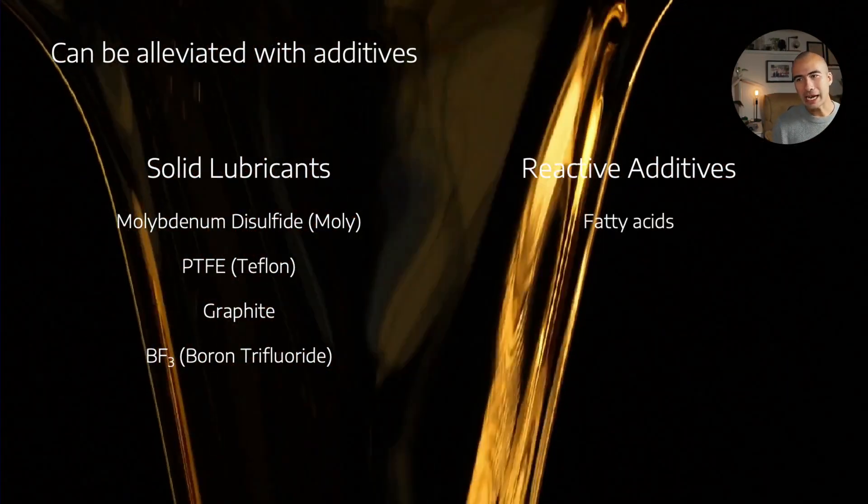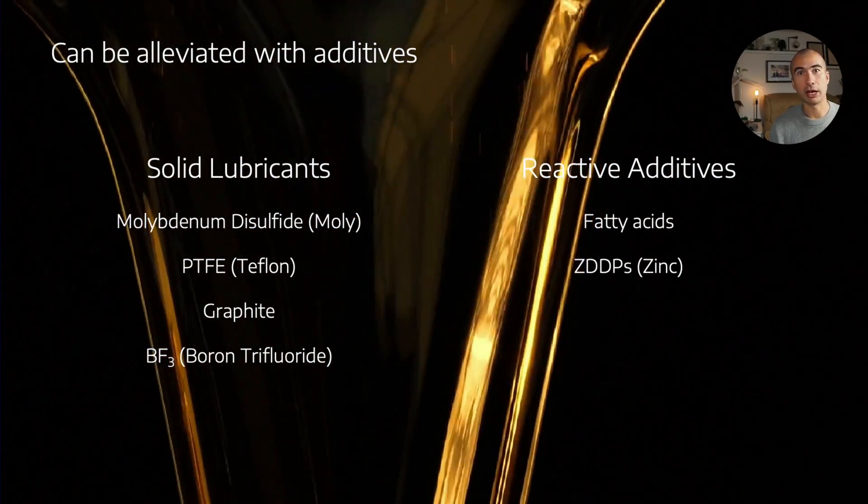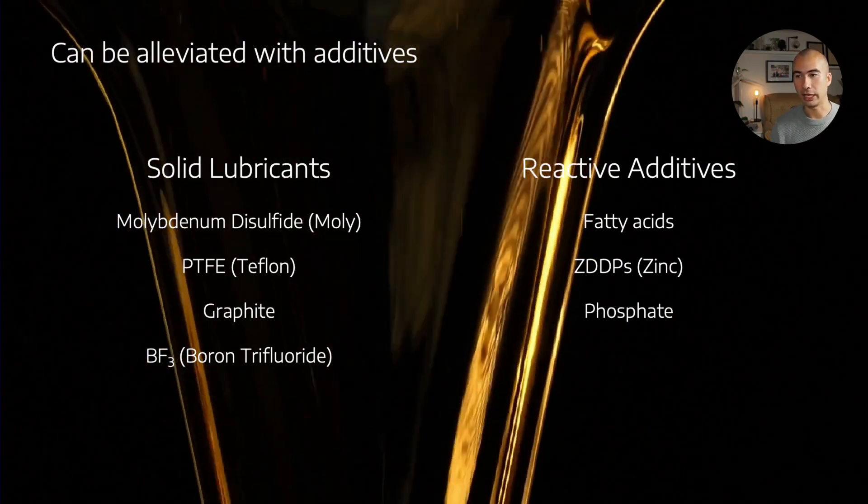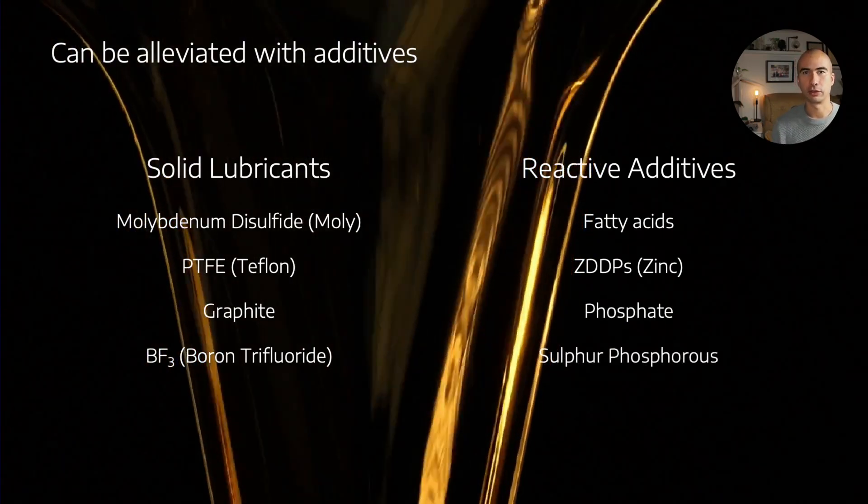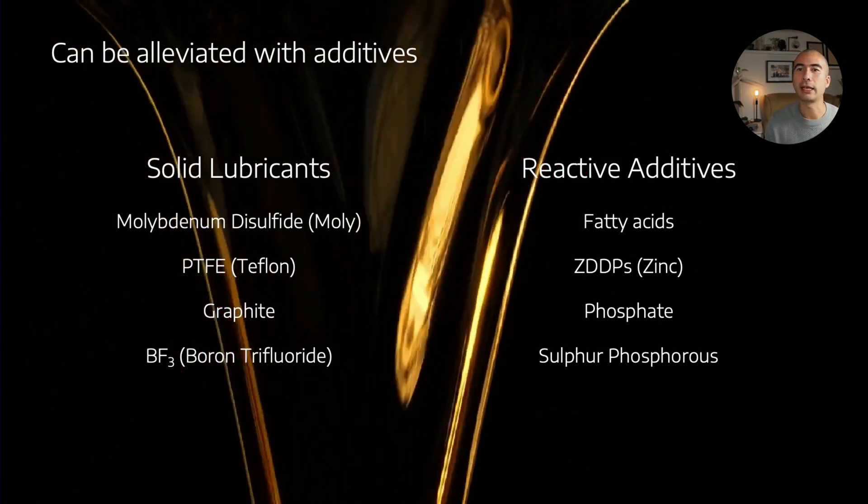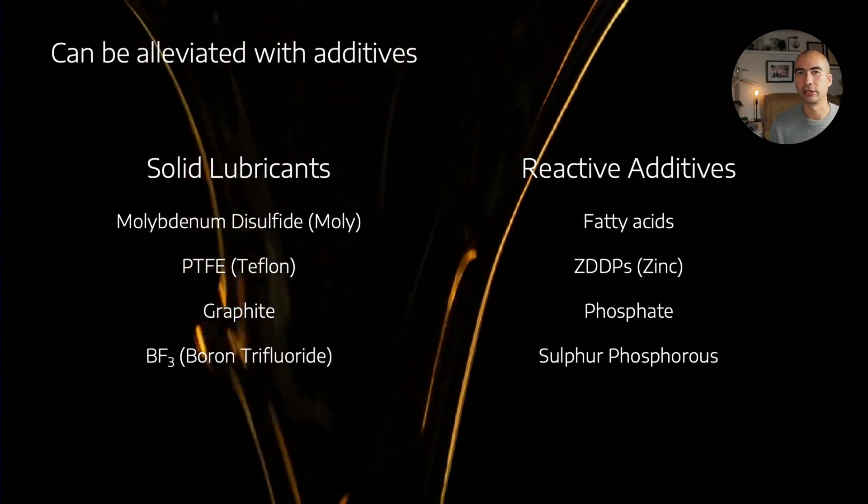Now, among the reactive additives, we've got things like fatty acids, ZDDPs, of which there are an entire family of ZDDPs, phosphate-based lubricants like phosphate esters, and sulfur phosphorus compounds as well. So some of these are metal-free, some of these metal-containing, and that can govern whether it's an ash-based or an ashless anti-wear additive.